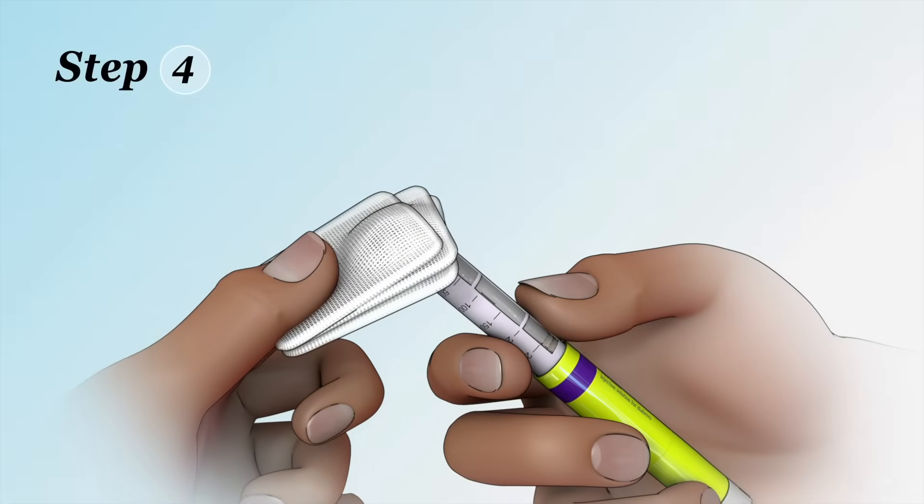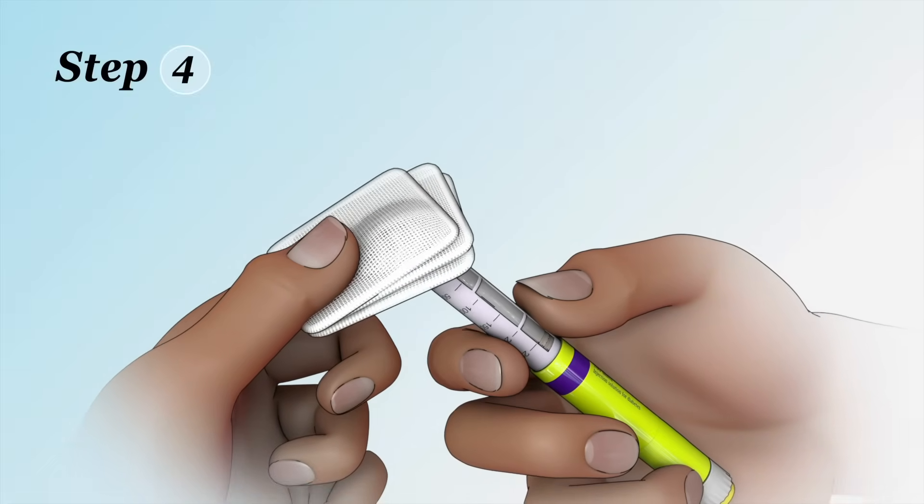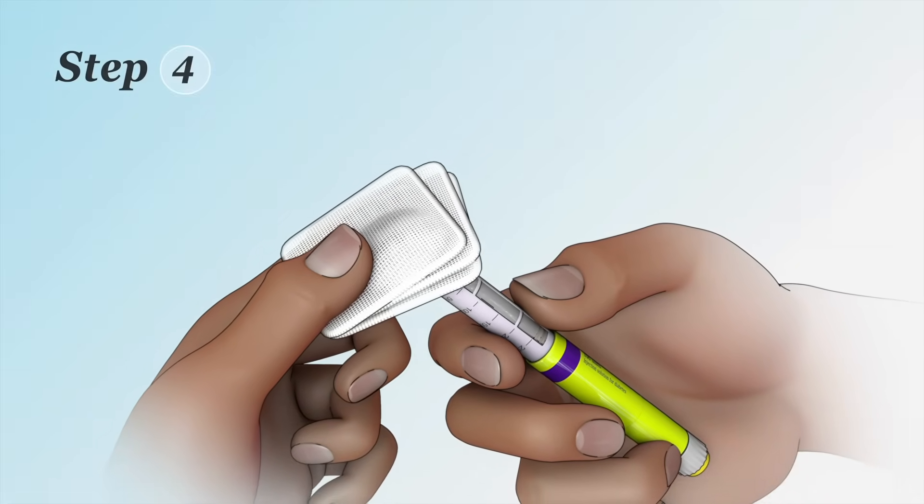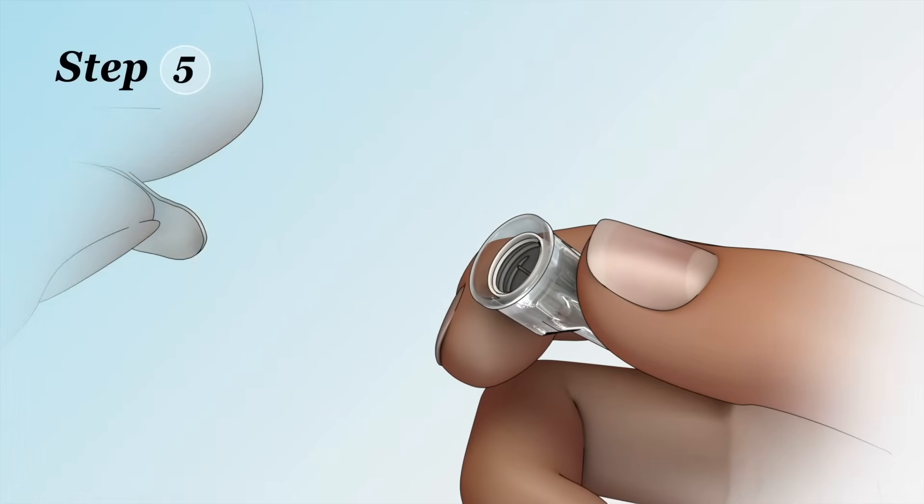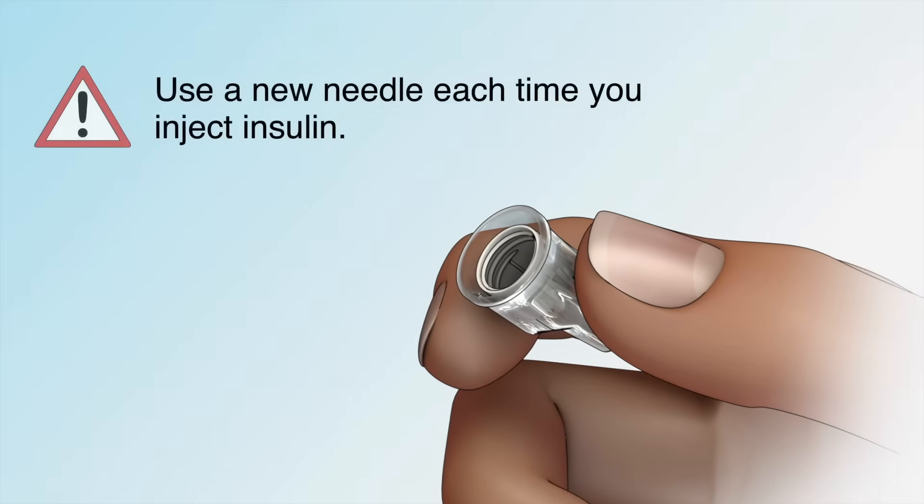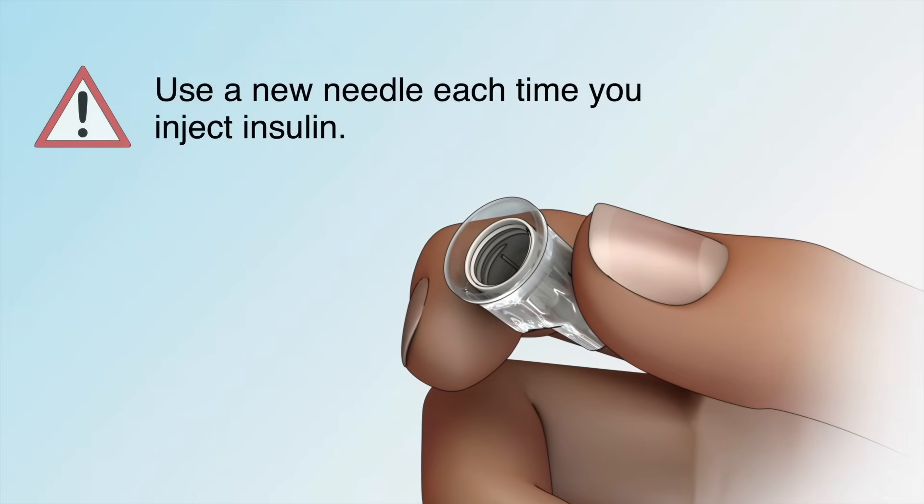Step 4: Use an alcohol wipe to clean the end of the pen where the needle attaches. Step 5: Remove the pull tab from the needle. Be sure to use a new needle each time you inject insulin.